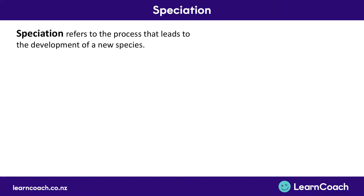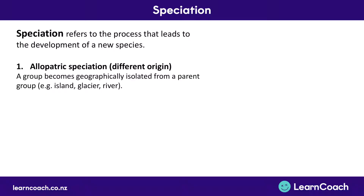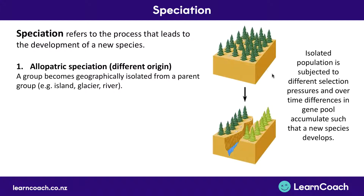Speciation refers to the process that leads to the development of a new species, and we need to know two different types. The first is allopatric speciation. This is where a group becomes geographically isolated from its parent group. If we look at pine trees, you can imagine there's an earthquake or a gully opens up and a river goes down the middle. The trees on the left are geographically separated from the trees on the right. Because they're now in different geographic areas, they'll have different pressures and evolve differently, potentially developing into a new species.